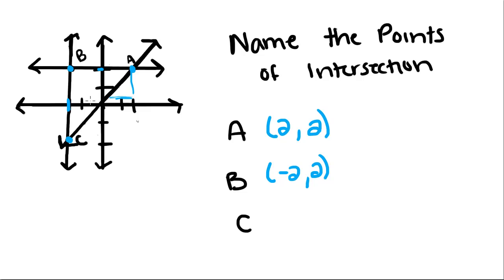For C, I have to go over 2 to the left, and down 2. Notice how, since this is y equals a number, the y's were the same. And this was x equals a number, so for these two, the x's were the same.